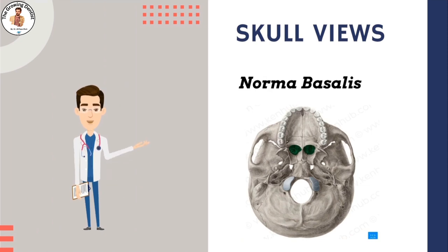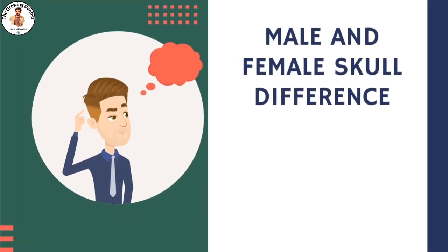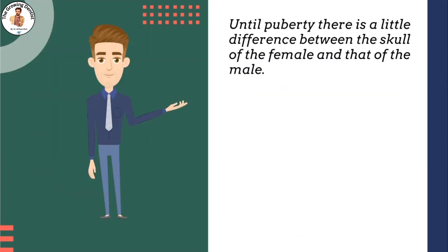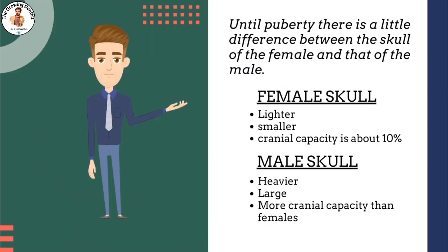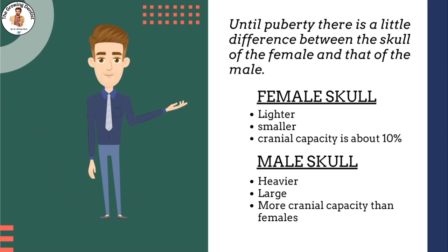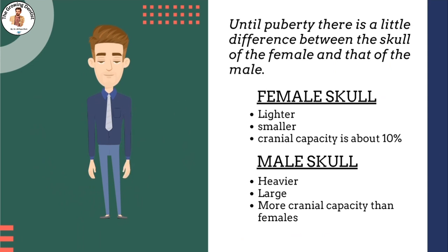Let's see how the male skull differs from the female. Until puberty, there is little difference between the skull of the female and that of the male. The skull of an adult female is, as a rule, lighter and smaller, and its cranial capacity is about 10% less than that of its male counterpart. Generally, male skulls are heavier, the bone is thicker, and the areas of muscle attachment are more defined.